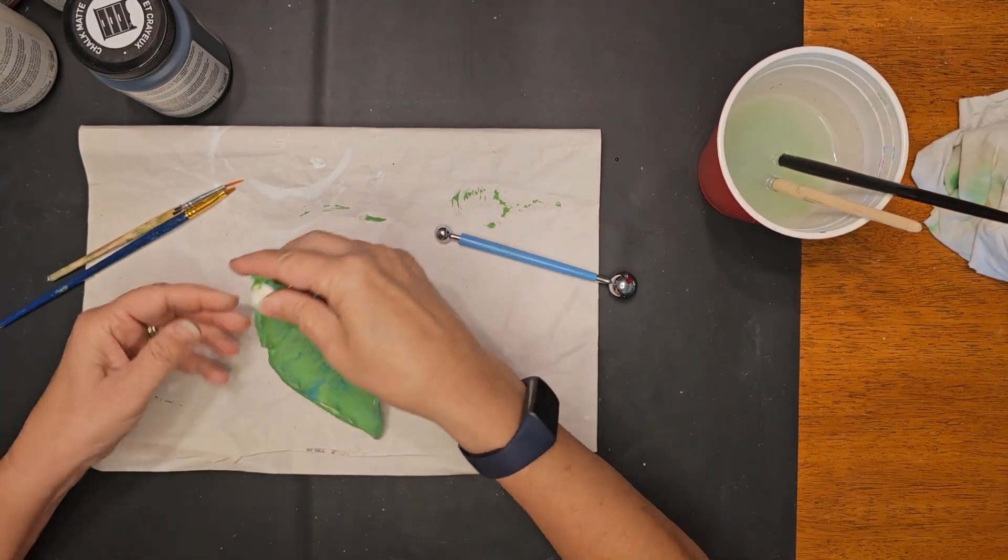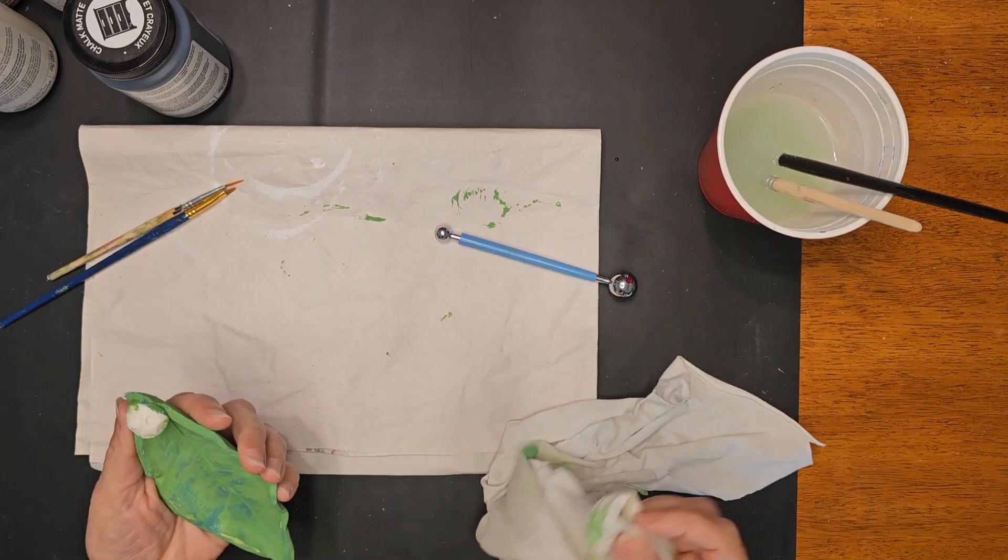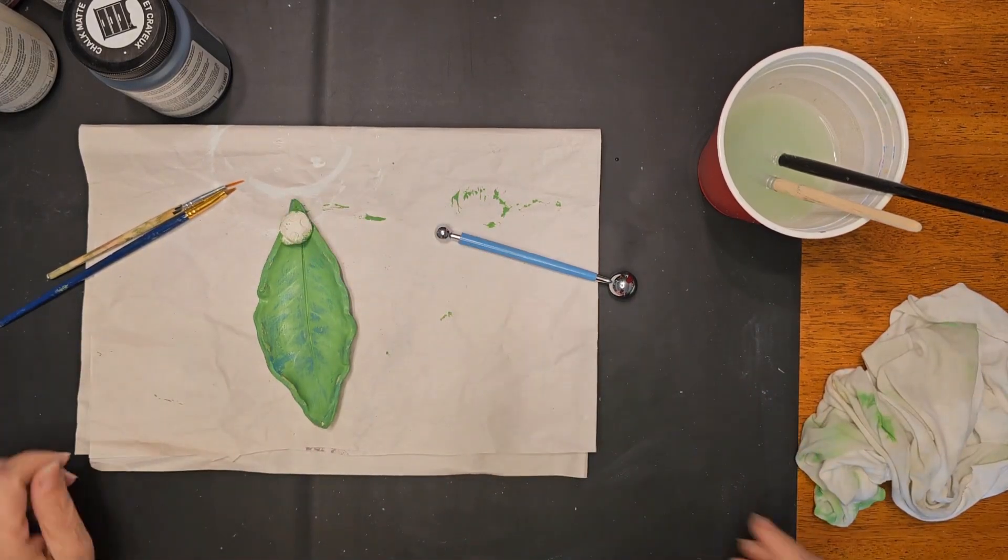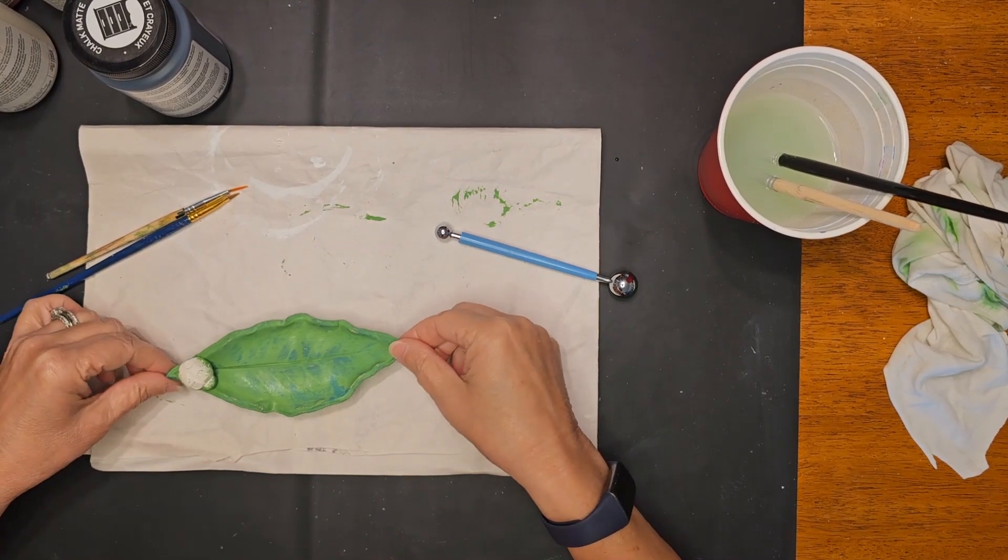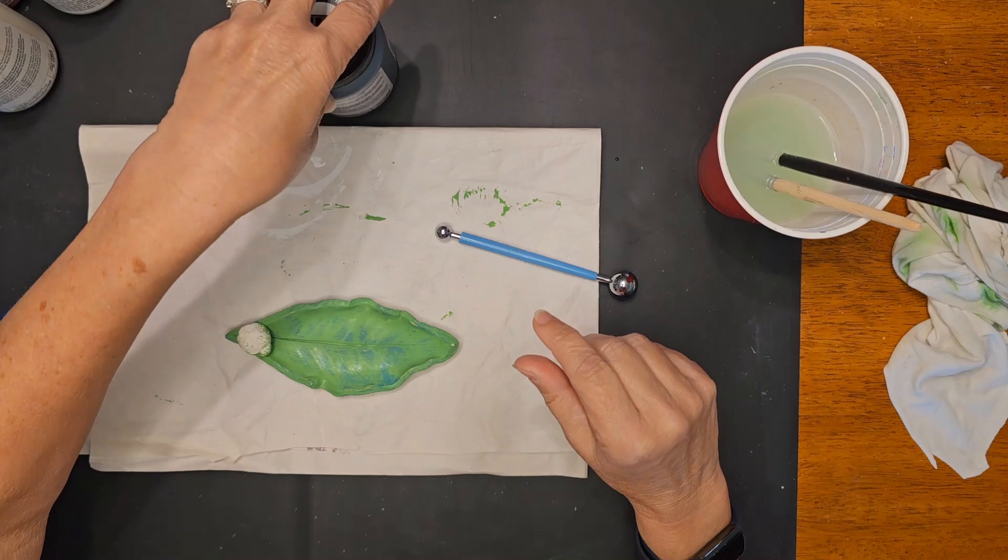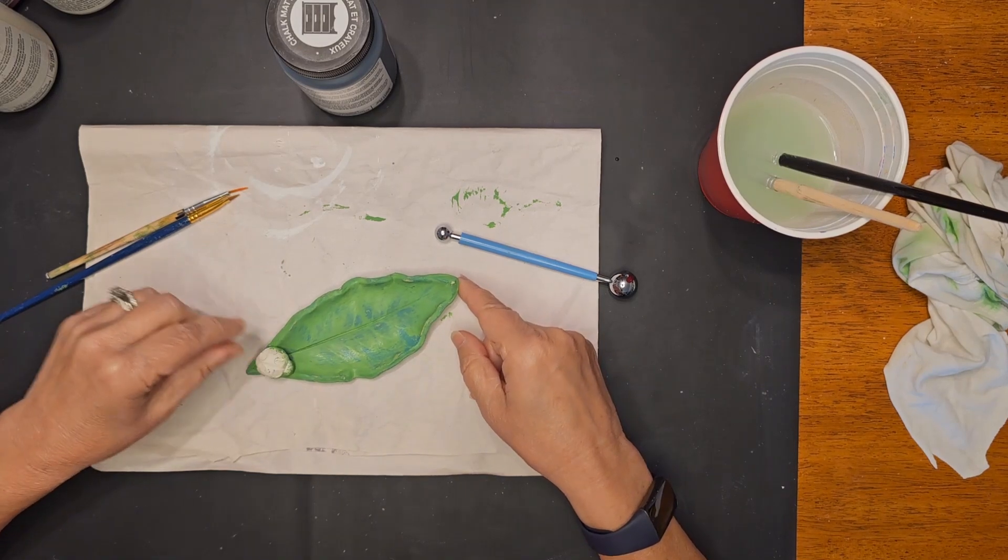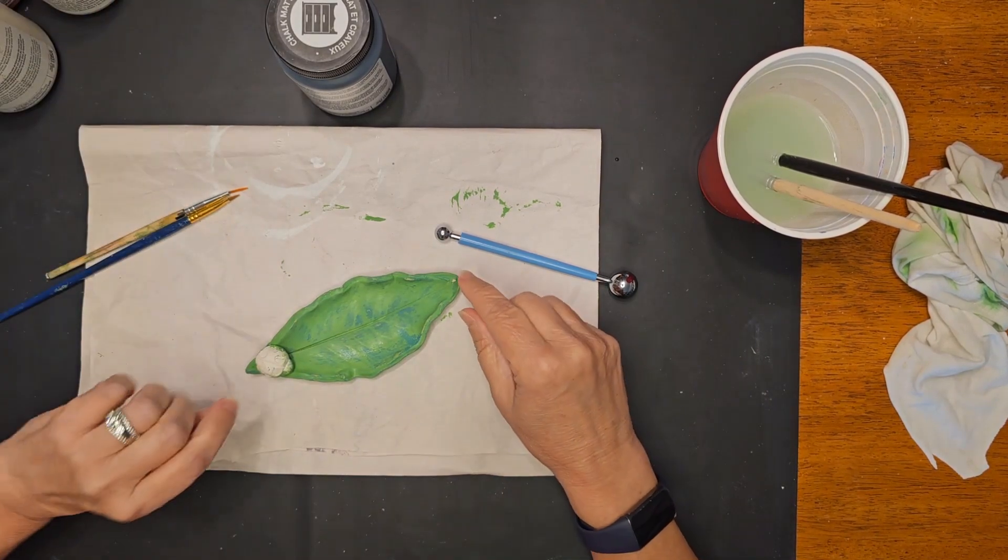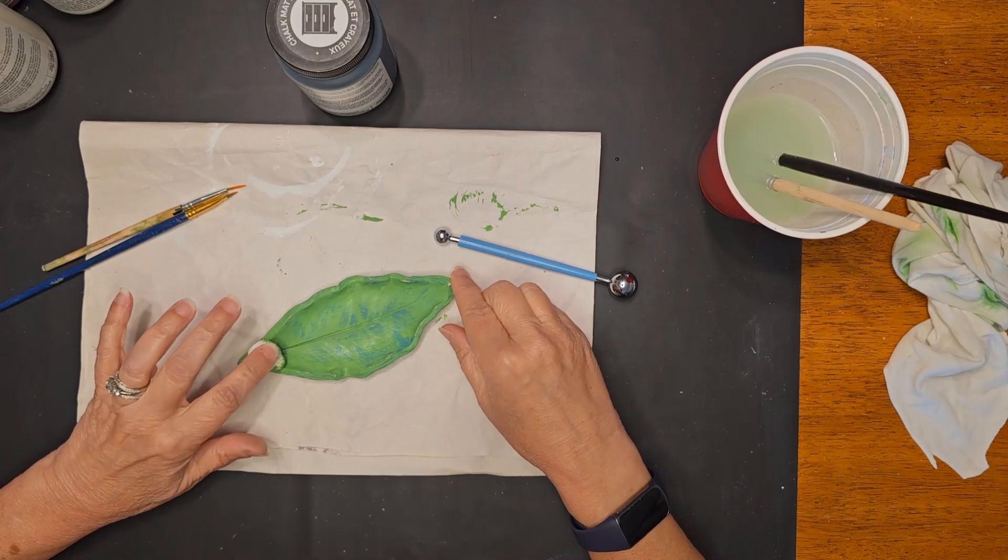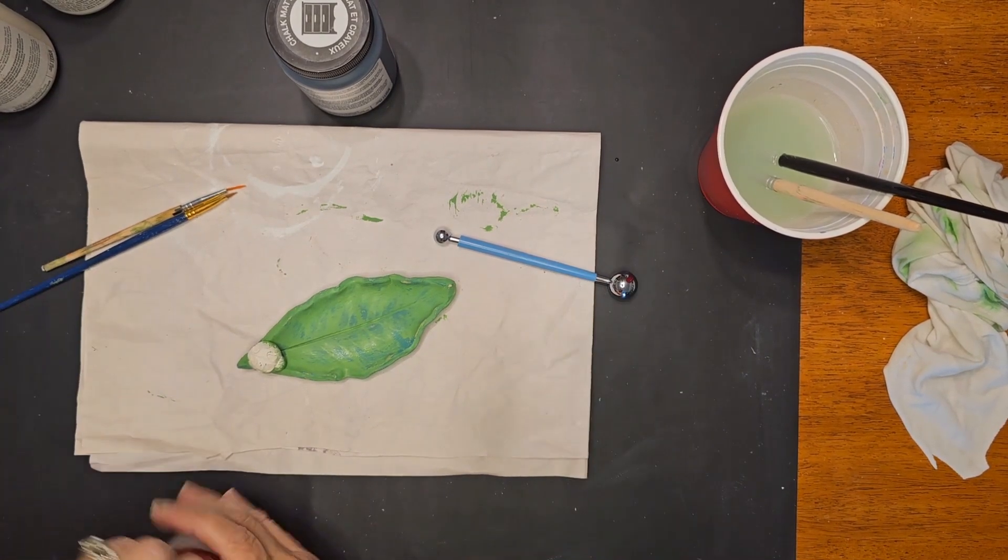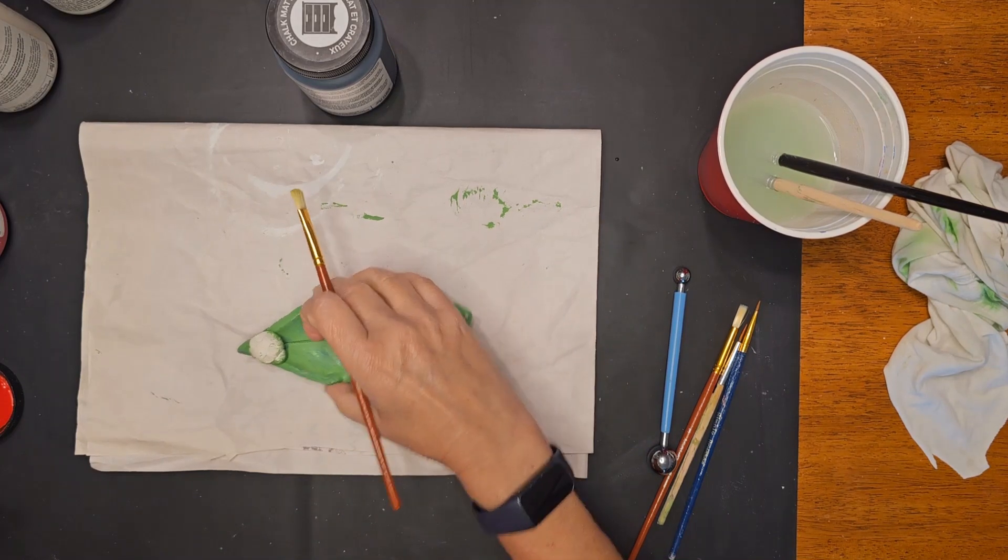Even though this is not completely dry yet, we are going to go ahead and start painting our little ladybug. We are going to start by painting him red all over, and then we will add in the black and white accents. I have a few paintbrushes to work with and a stylus, so let's just jump right in.